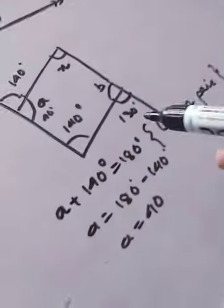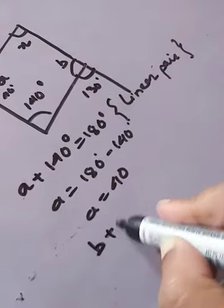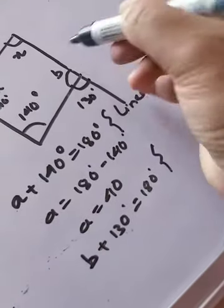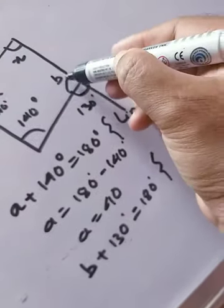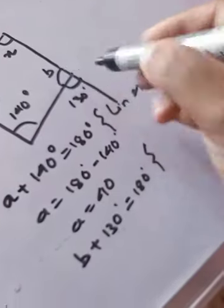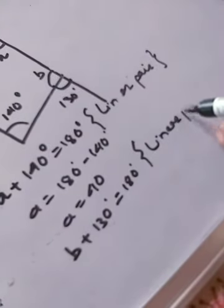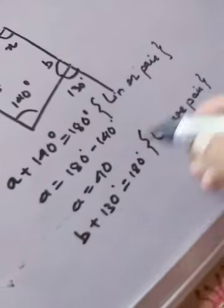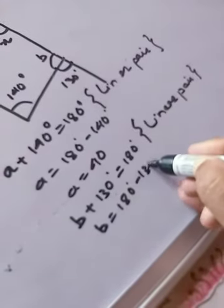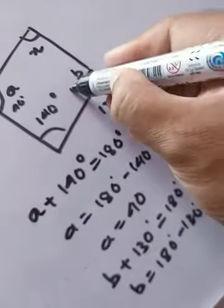Similarly, we'll do the same with angle b. b + 130° = 180°, because they are also adjacent to each other and their combination is 180° — they are also a linear pair. So b = 180° − 130° = 50°.